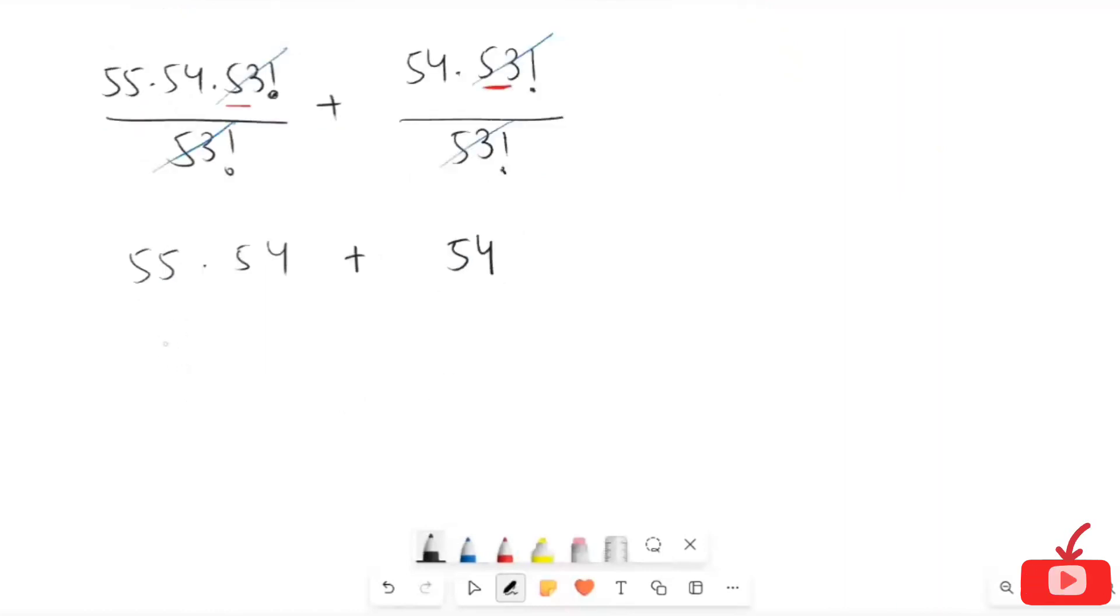Now I'm going to make a factor of it, so here I'm going to take out the common number that is 54: 54 times (55 plus 1).